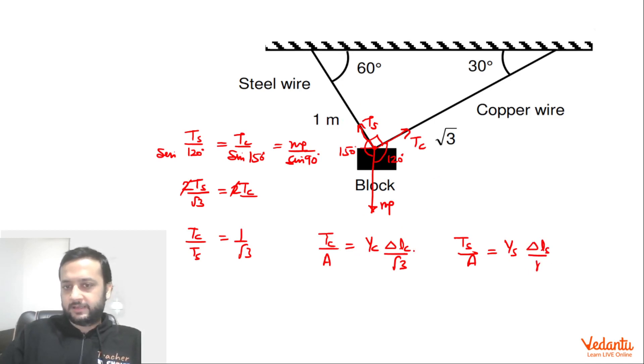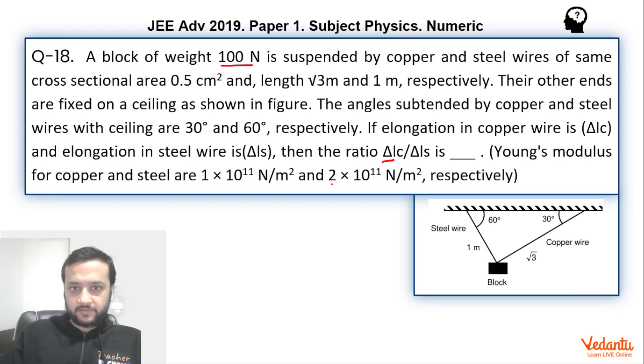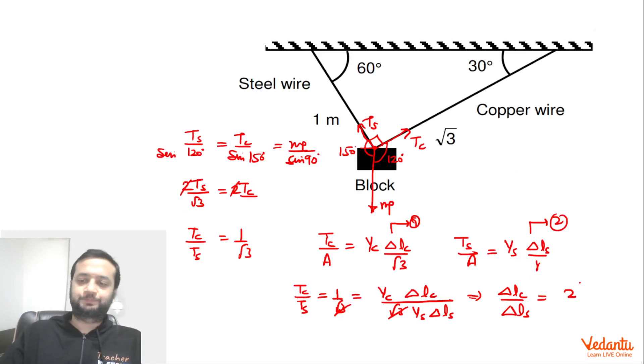Now if you take Tc by Ts, let's say this is equation 1 and this is equation 2. So if you divide equation 1 by equation 2 you are going to get Tc by Ts which is 1 by root 3 equals Yc into delta Lc divided by root 3 into Ys delta Ls. Root 3 and root 3 will be gone so delta Lc upon delta Ls equals Ys upon Yc. Now if you take the ratio you can see that this will be cancelled so we are going to get the answer as 2, this will be the correct answer.